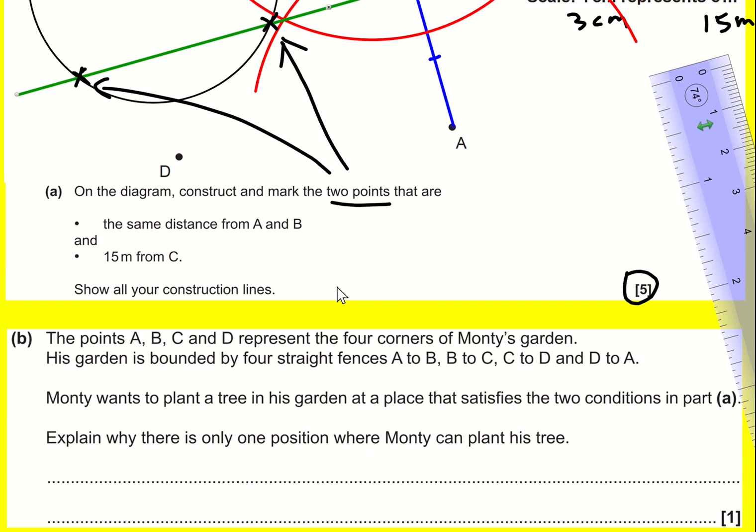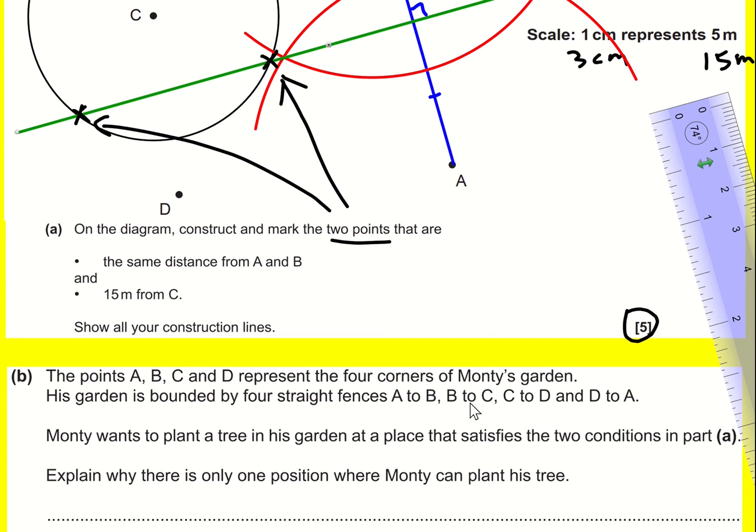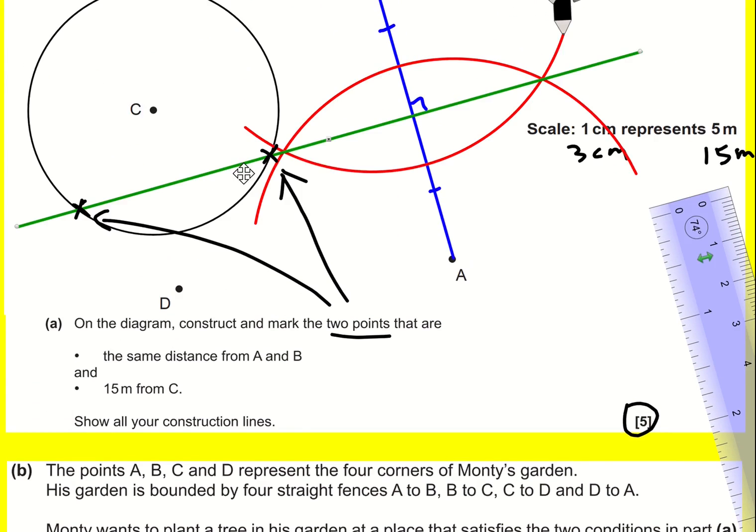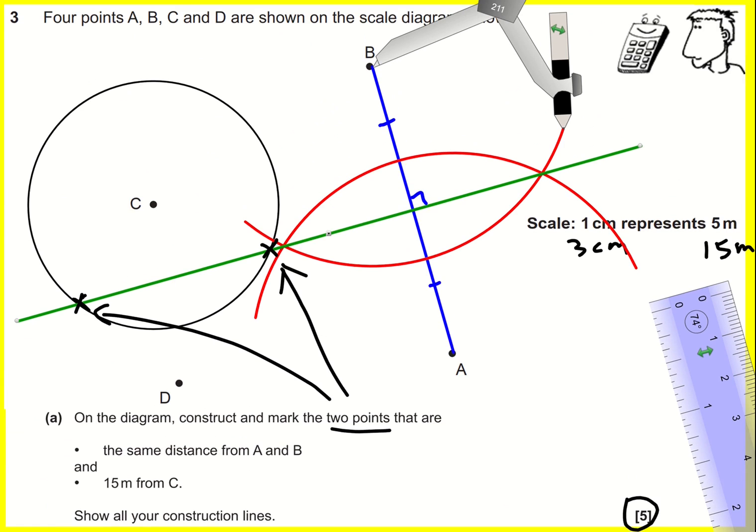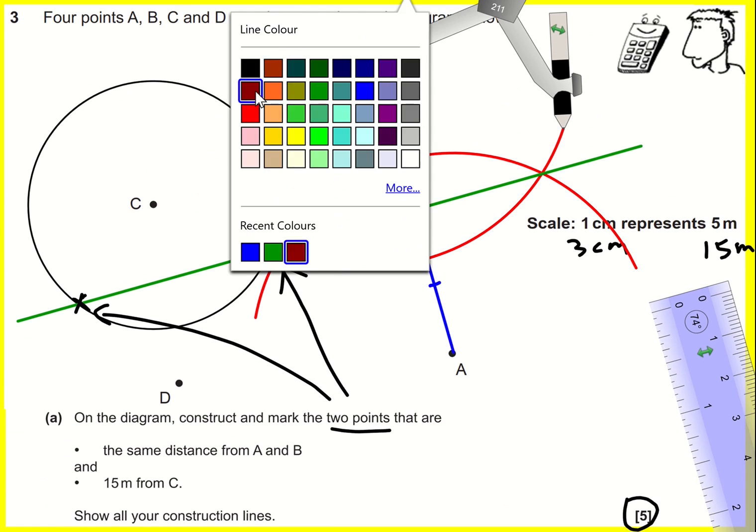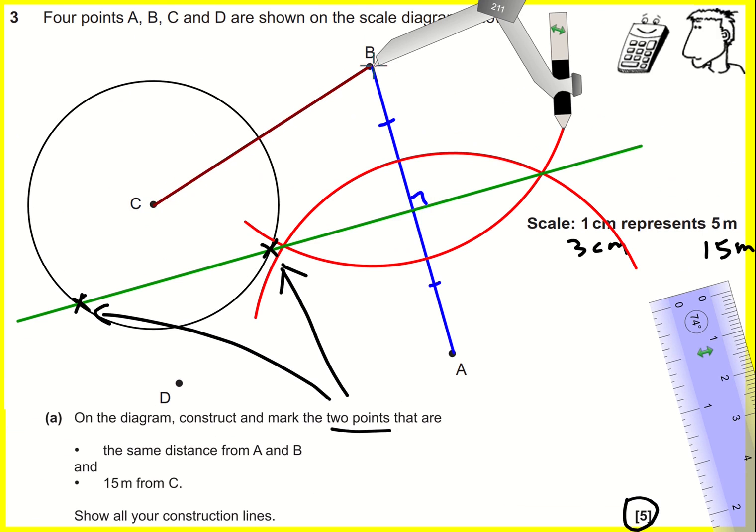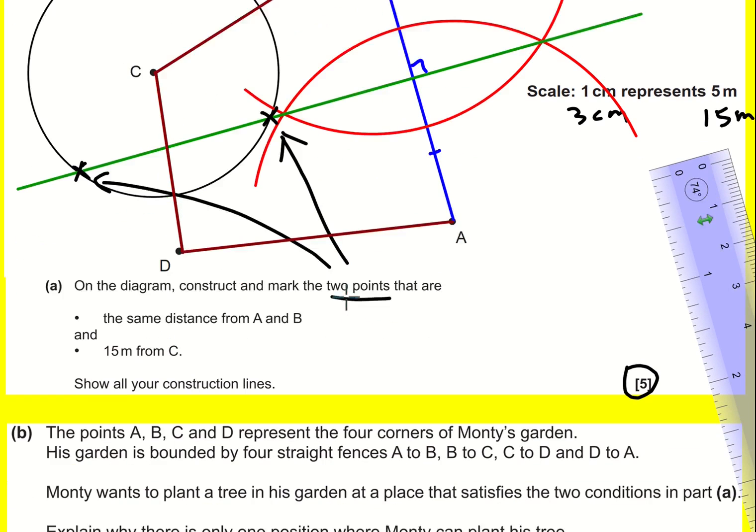Part B says that A, B, C, D actually represent the four corners of Monty's garden. The garden's bounded by four straight fences along here. We could draw them in to help us. C to B, we've already got B to A, A to D. That's going to be his garden.